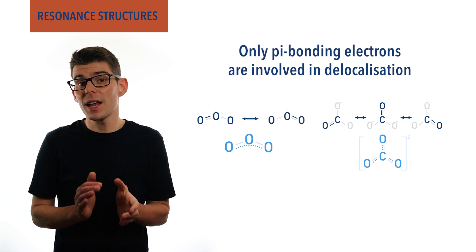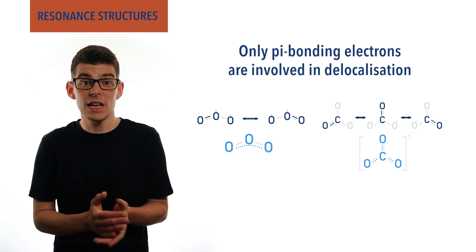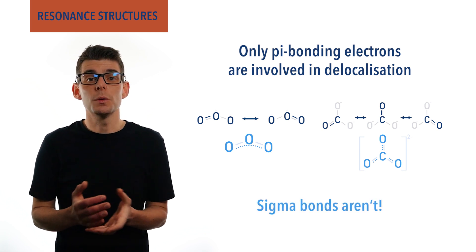In contrast, the electron pairs in single bonds, sigma bonding electrons, remain fixed and don't participate.